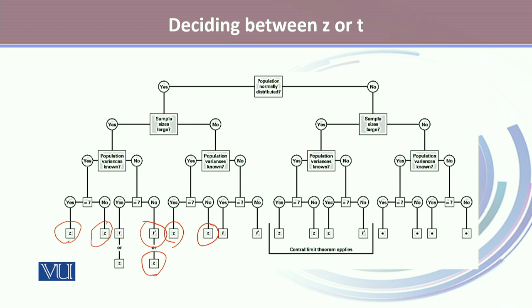But when populations are not normally distributed and the sample size is small — whether population variances are known or not known, equal or not equal — we use a different type of test called non-parametric tests, which will be discussed in a later module.